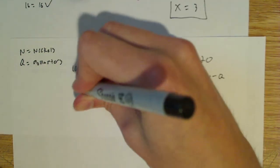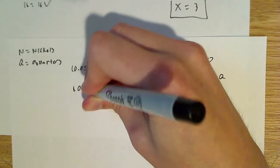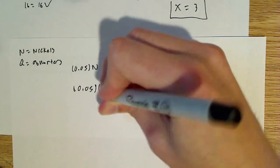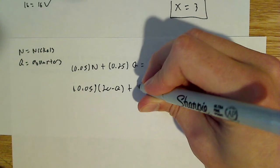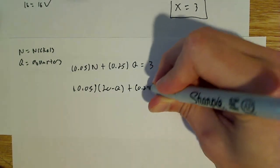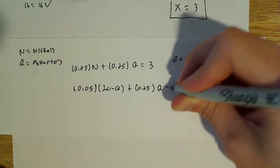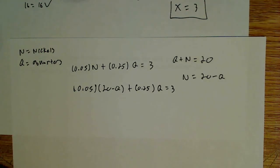So this becomes 0.05 and that's going to get multiplied by 20 minus q. That's going to be plus 0.25q and that all equals three.